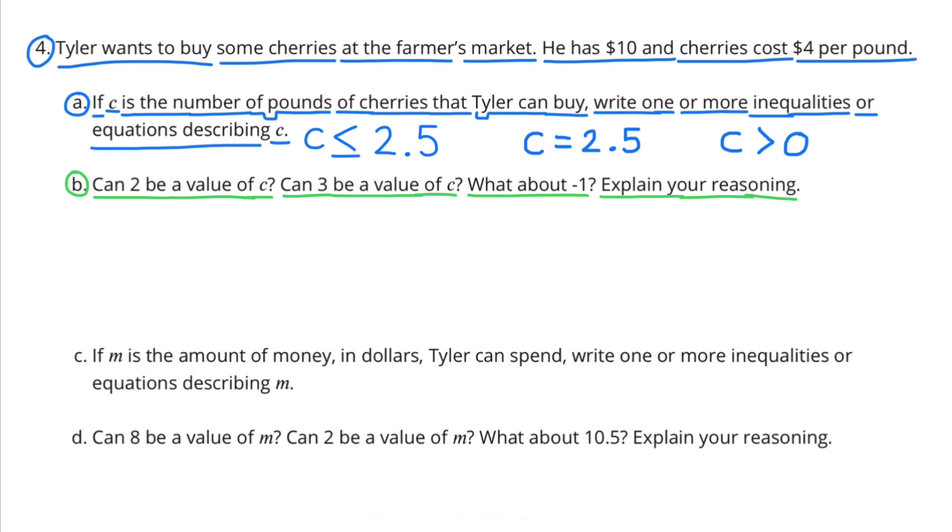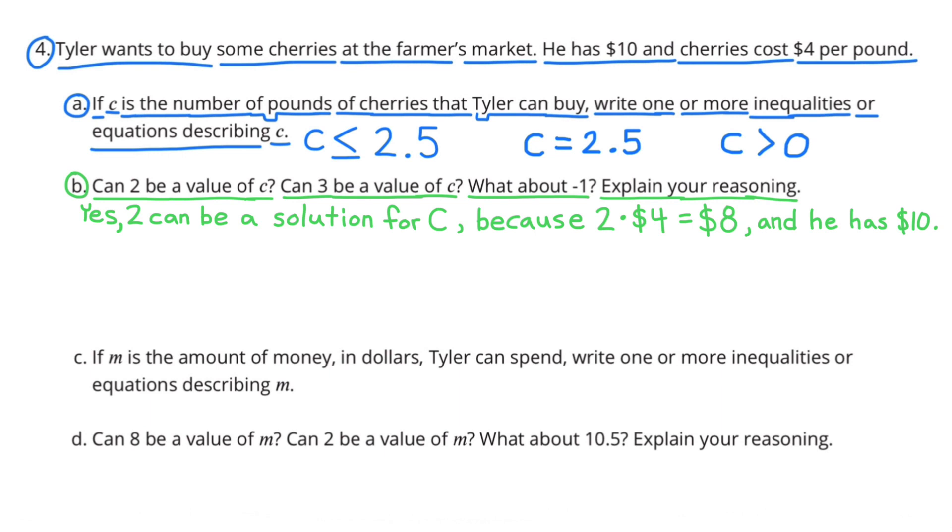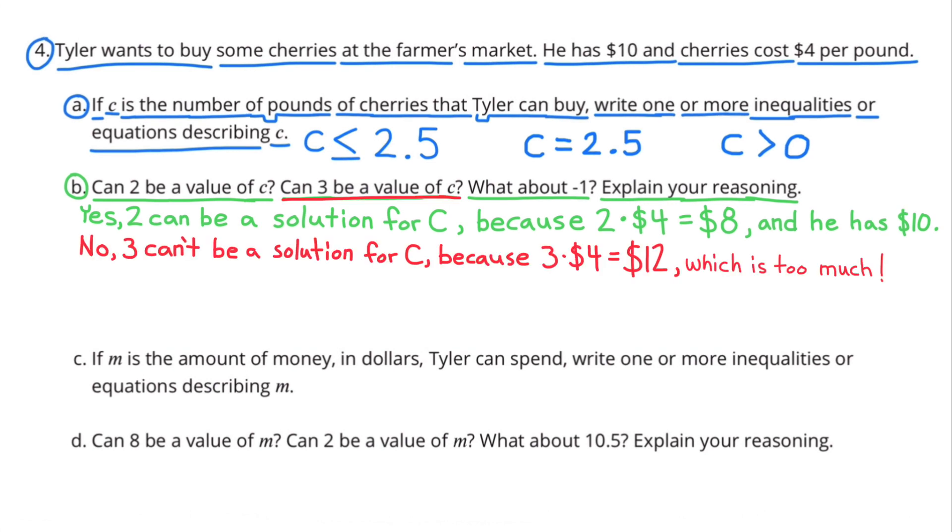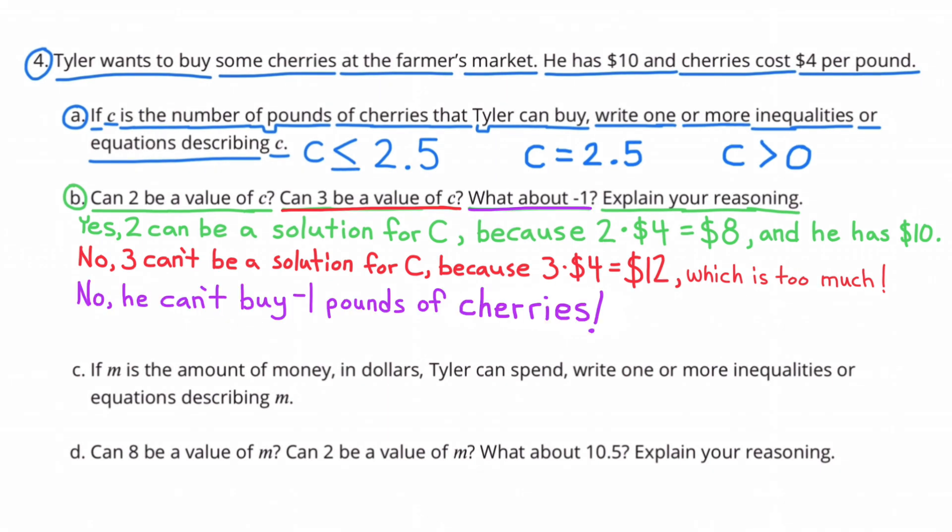B. Can 2 be a value of C? Can 3 be a value of C? What about negative 1? Explain your reasoning. Yes, 2 can be a solution for C, because 2 times $4 is $8, and he has $10. No, 3 can't be a solution for C, because 3 times $4 is $12, which is too much because he only has $10. And finally, no, he can't buy negative 1 pounds of cherries. That just doesn't make sense.